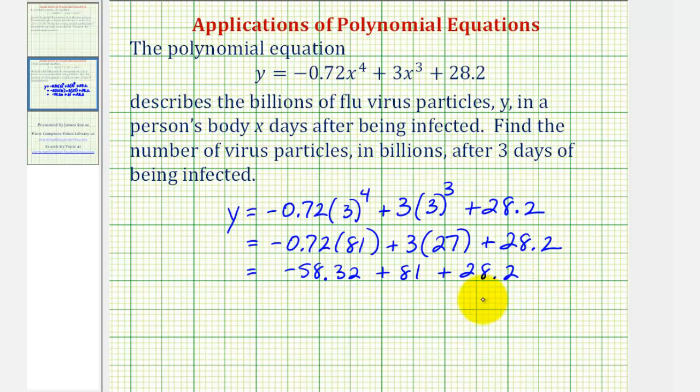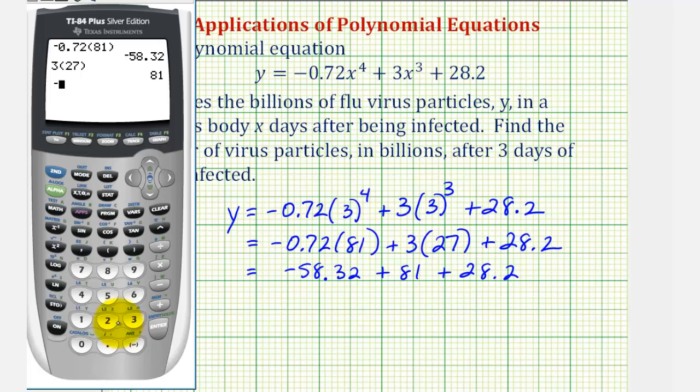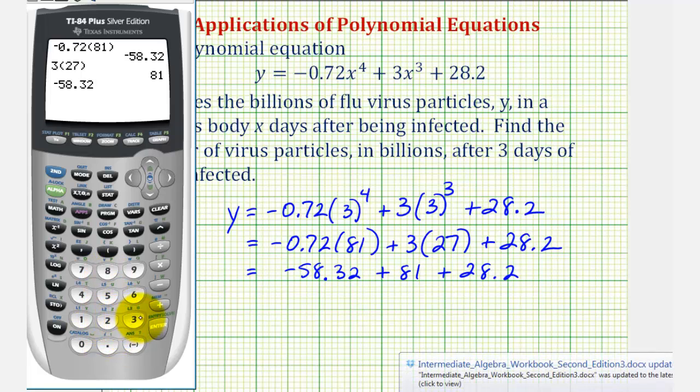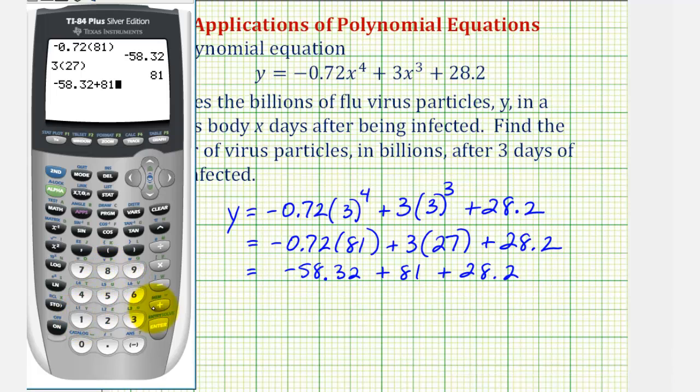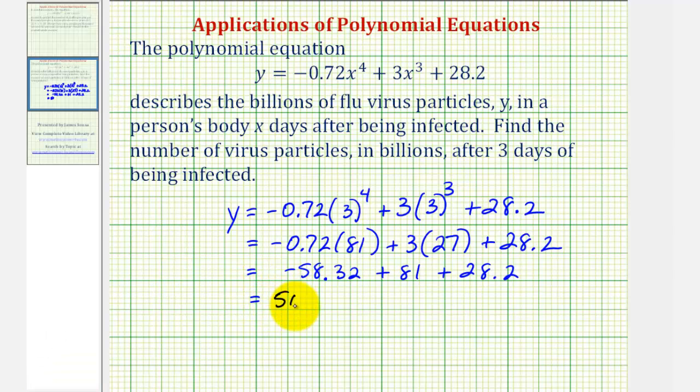And now we'll add from left to right. So y is equal to 50.88, which means 50.88 billion virus particles are present after three days of being infected.